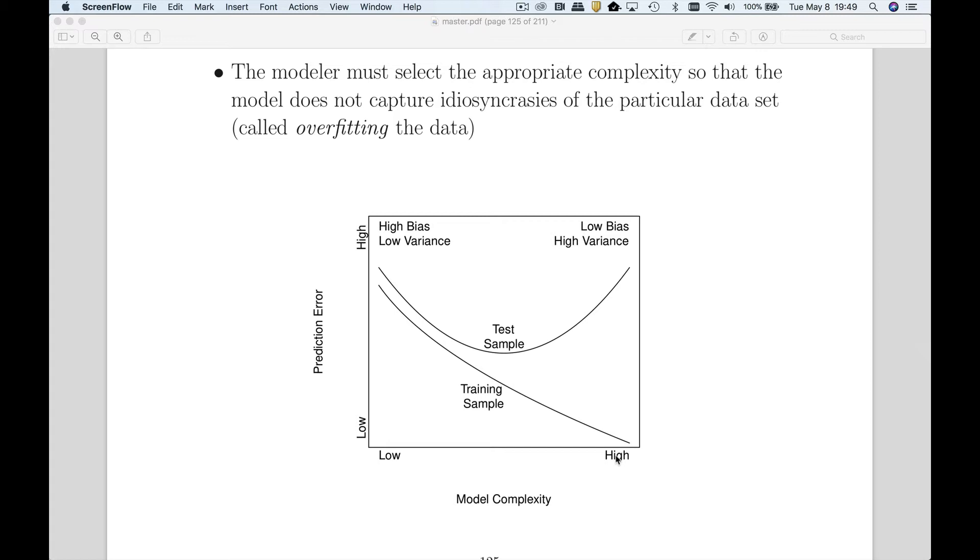Another example of a complexity parameter is not having any variables in the model versus having many variables in the model. If we give ourselves lots of variables, then that's a complex model. Those are just two examples of how you can see how a model can be very simple versus very complex.